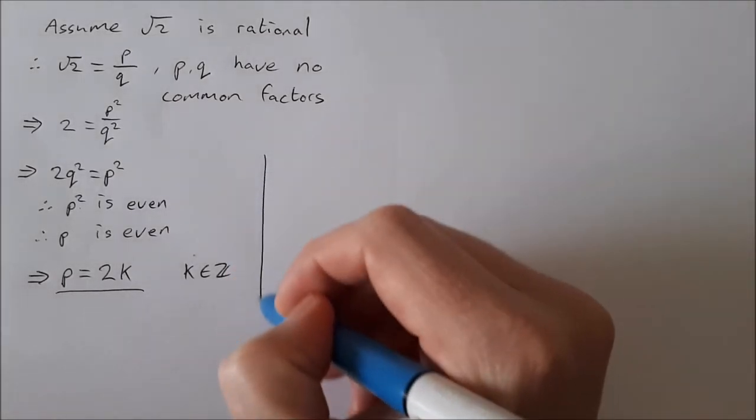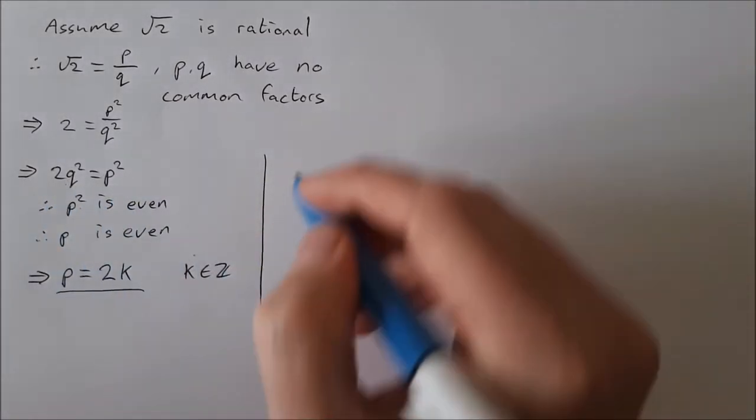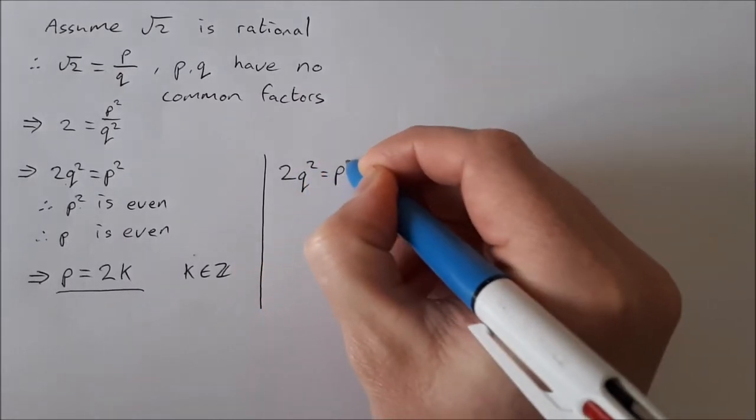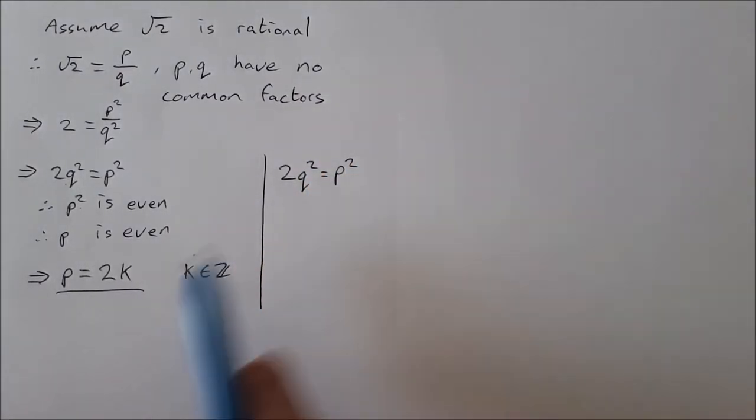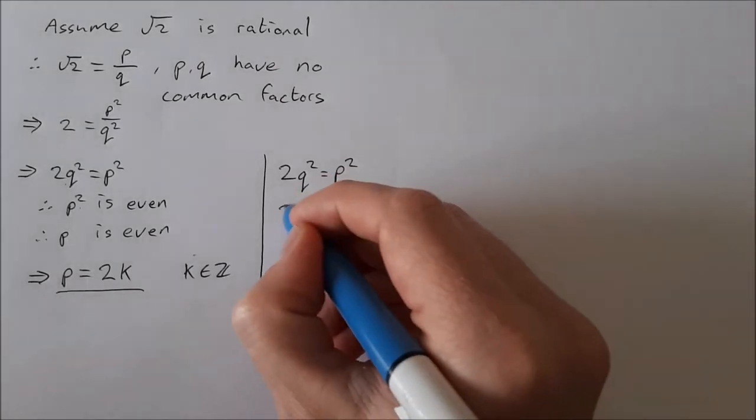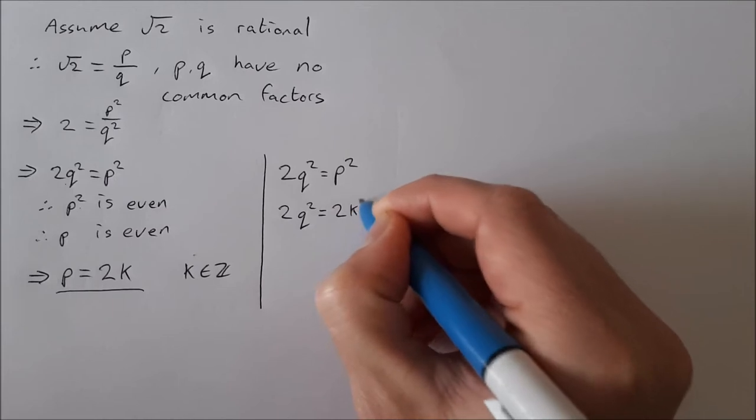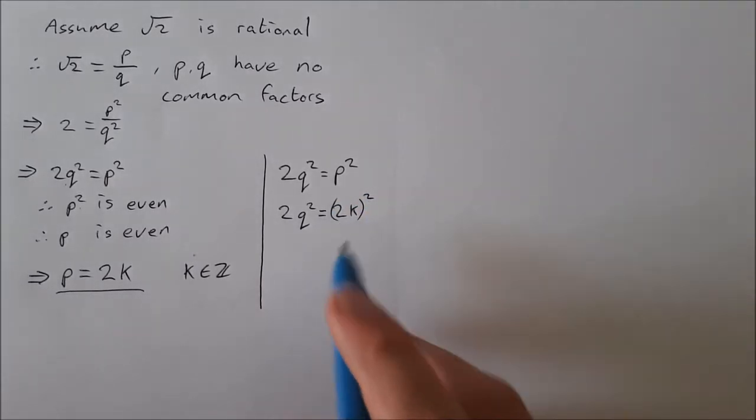That's the first thing that we need to say. The second thing then is using this here. So 2q squared is equal to p squared. Well now instead of p I'm going to write in 2k, so 2q squared is equal to 2k squared.